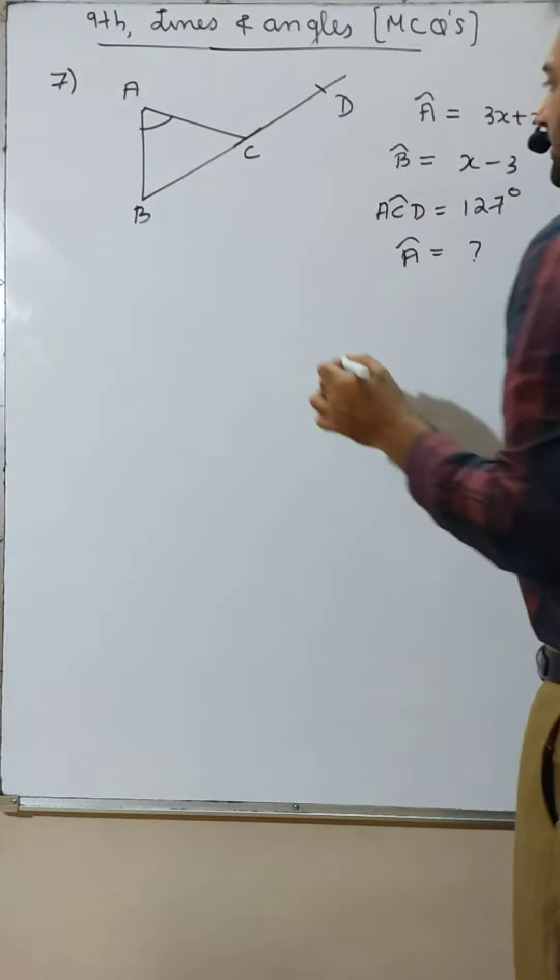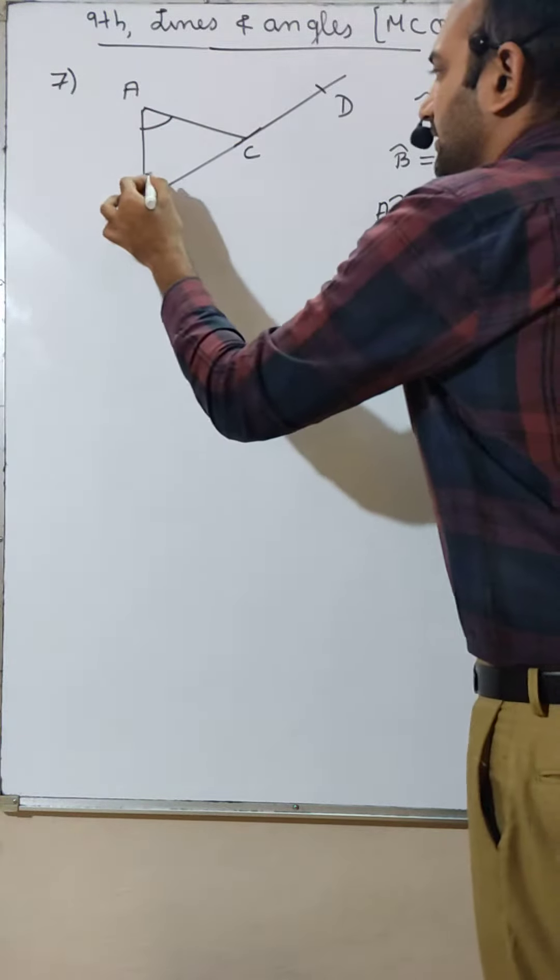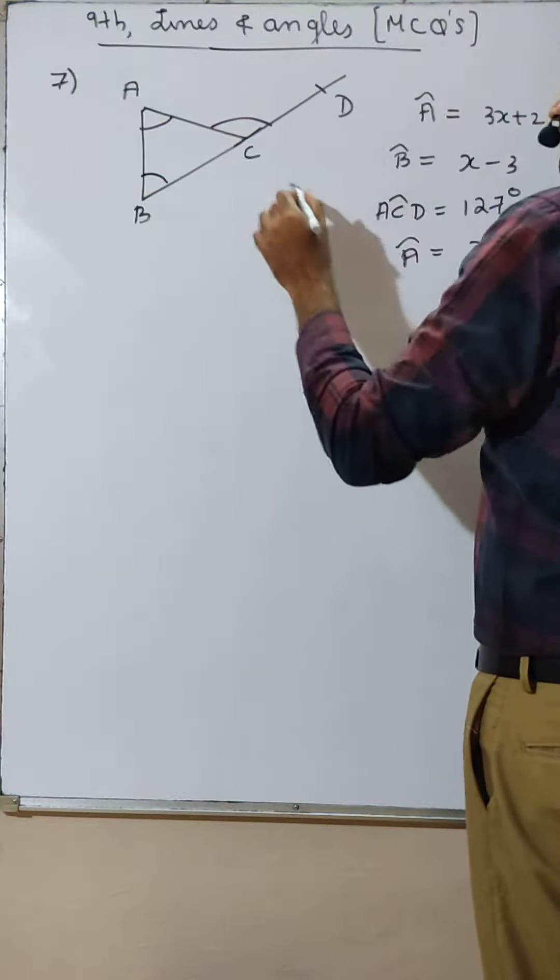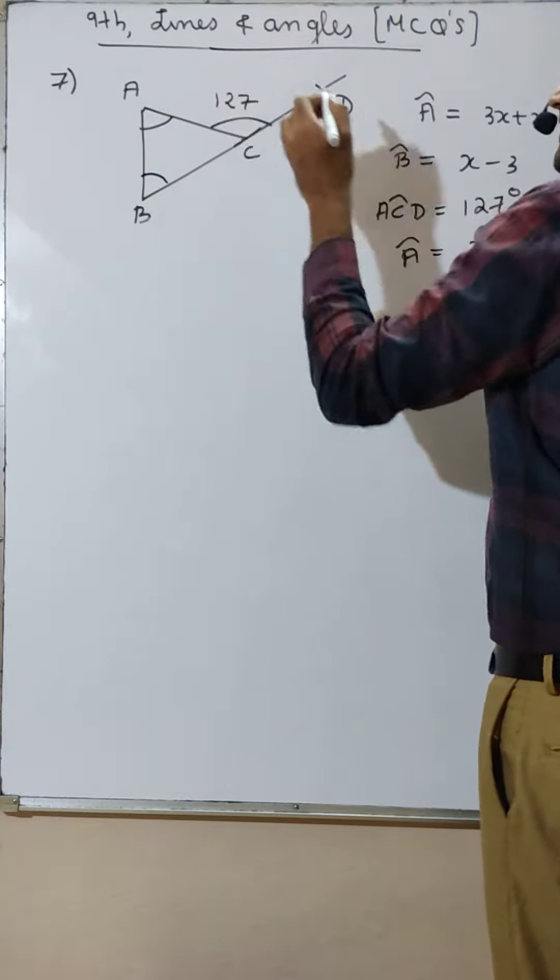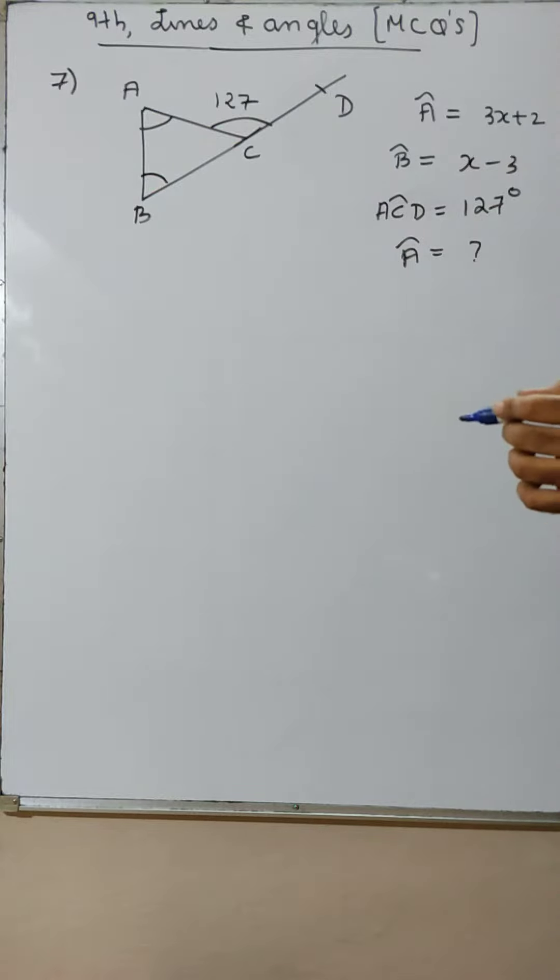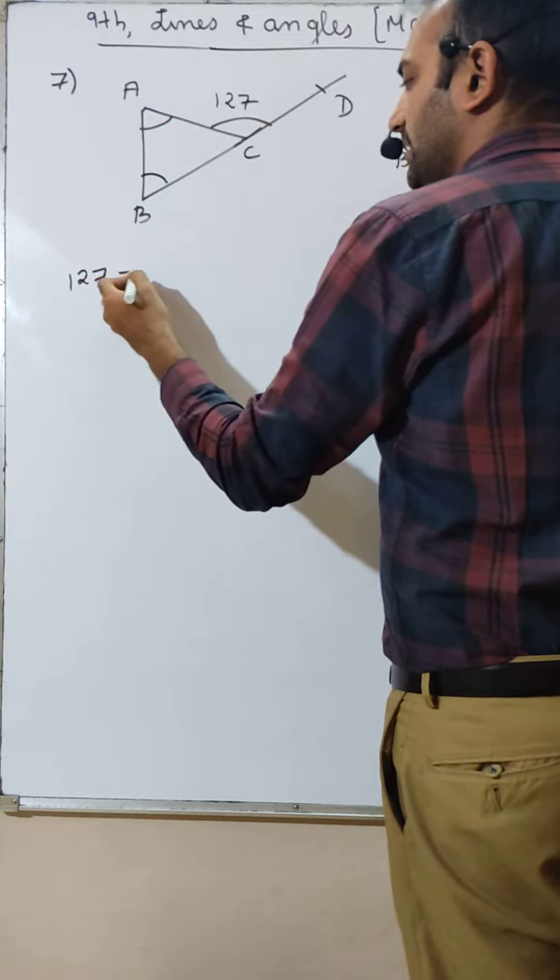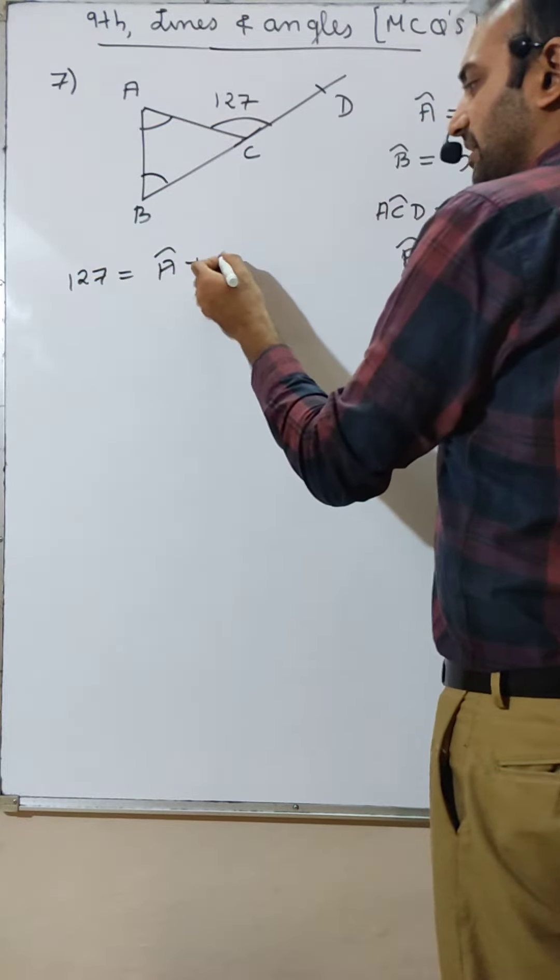Angle A and angle B are given, and angle ACD is given as 127 degrees. My brain tells me very well, exterior angle property. Using the exterior angle property, 127 is equal to angle A plus angle B.